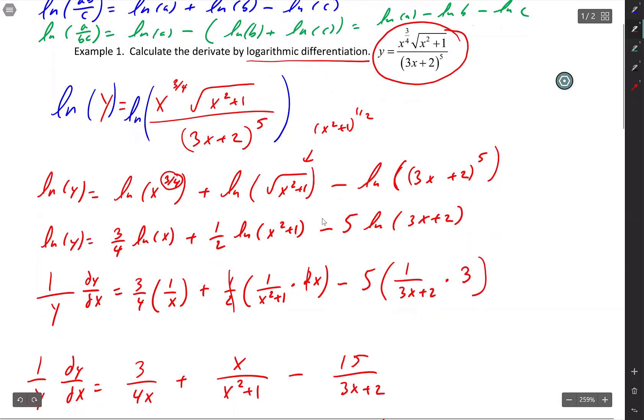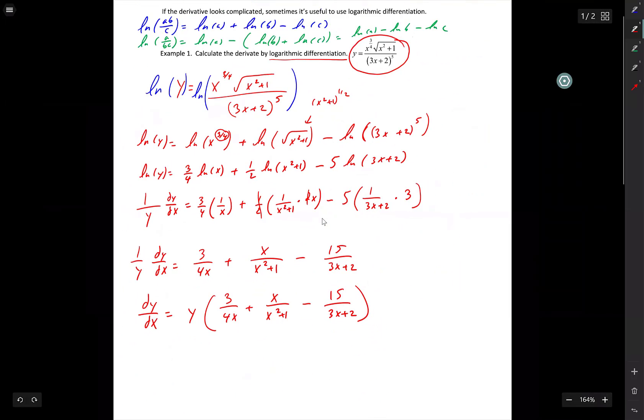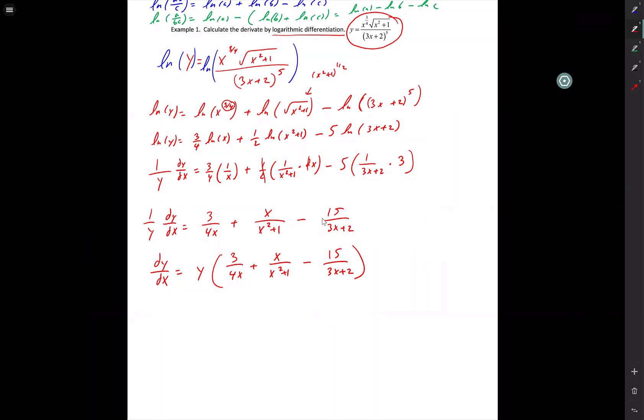Relax. It's ugly, but we're done. Nope, because it's already in factored form. So I'm zooming out just so I can see it, guys. I'll zoom back in a little bit. So here's my derivative, dy/dx equals x to the 3/4 square root of x squared plus 1 over 3x plus 2 to the fifth times 3 over 4x plus x over x squared plus 1 minus 15 over 3x plus 2.